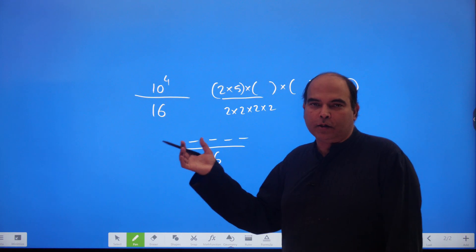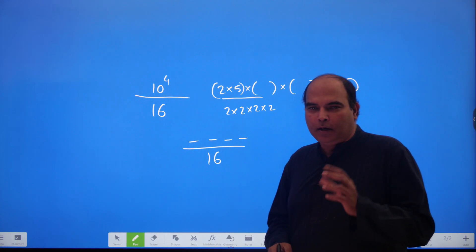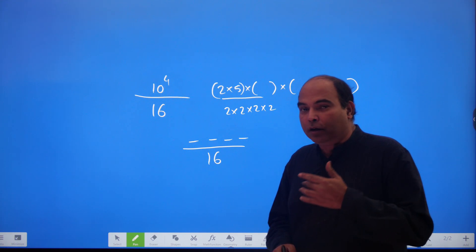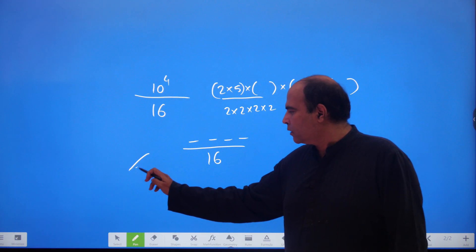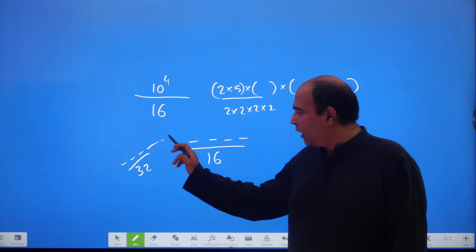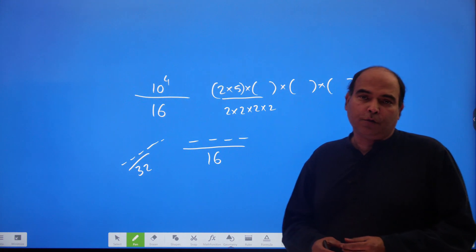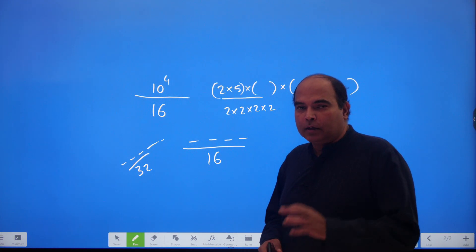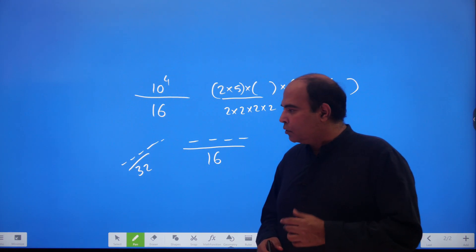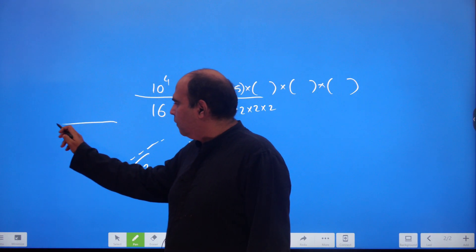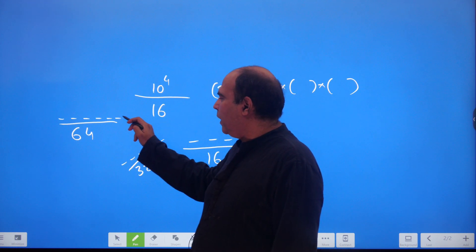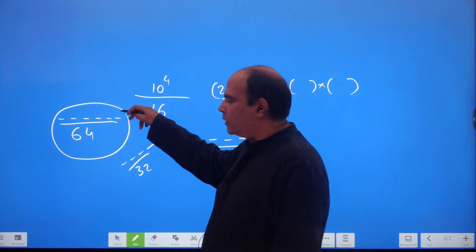Although this question sounds very intimidating, it's actually very simple. This logic continues: for 32, you check the last five digits, because 32 = 2⁵. For 64, you check the last six digits, because 64 = 2⁶. So if a number is divided by 64, just take the last six digits and divide by 64 to get the remainder.